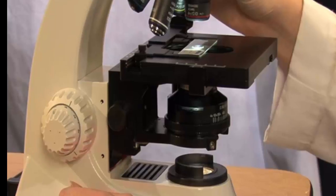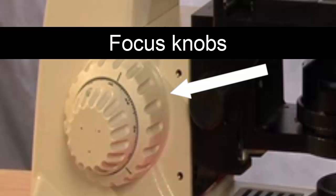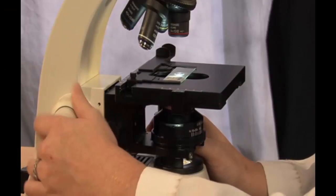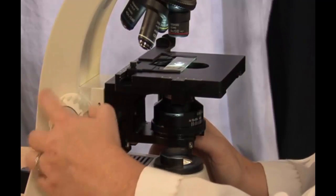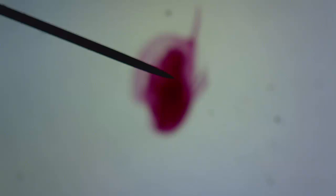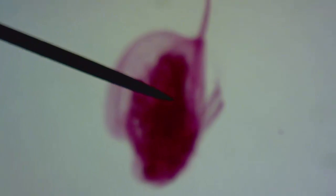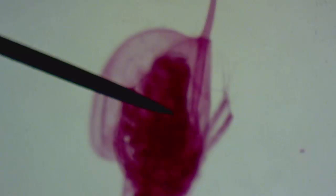Now, we will move to the focusing mechanism, which consists of two knobs. The outer knob is the coarse focus knob and when you turn this knob, the stage moves quite a bit. The coarse adjustment knob is for bringing specimens into focus and should only be used at the lowest magnification.